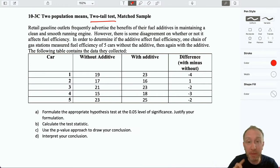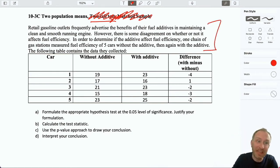Now again like always let's go through the problem and make sure that we can understand why it's a two-tailed test because normally of course you're not going to be told. You probably won't even be told that it's a matched sample. So we should also probably be able to make sure that we can identify that it's a matched sample by reading the clues, by reading the information contained in the problem. So retail gasoline outlets frequently advertise the benefits of their fuel additives in maintaining a clean smooth running engine. However there's some disagreement on whether or not it affects the fuel efficiency. So you know those additives that they always advertise as cleaning your engine while you drive. Does it affect fuel efficiency? In order to determine if the additive affects fuel efficiency, one chain of gas stations measured fuel efficiency of five cars without the additive, then again with the additive. And then the following table contains their data.